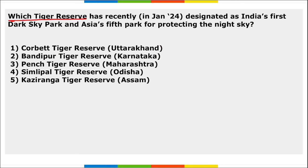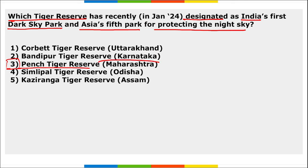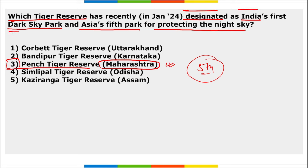Which tiger reserve has recently been designated as India's first Dark Sky Park and Asia's fifth park for promoting the night sky and preventing light pollution? It is Pench Tiger Reserve in Maharashtra. The Dark Sky Park certification focuses on lighting policy, dark-sky-friendly practices, education, and monitoring the night sky.